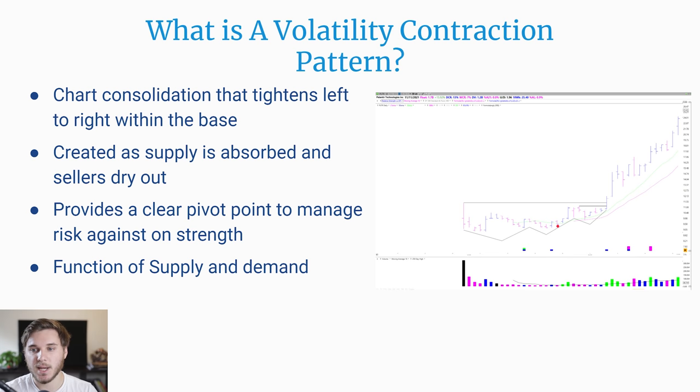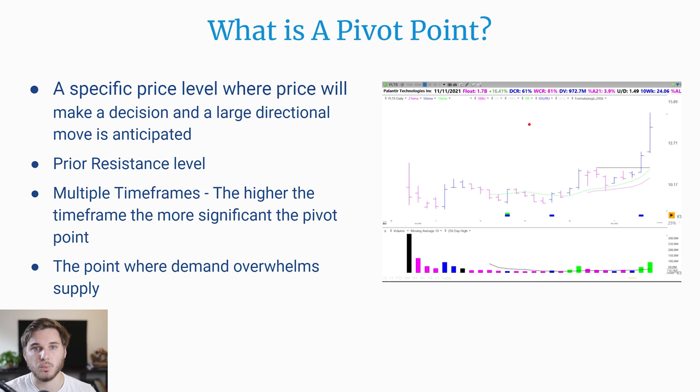This provides a clear pivot point to manage risk against on strength. As Minervini likes to say, this chart pattern is the effect, not the cause. It's really the supply and demand characteristics that creates this dynamic, which can lead to really strong moves in just a matter of a few days and weeks. A pivot point is a specific price level where price will make a decision and a large directional move is anticipated, occurring at the very end of a proper basing structure like a VCP.